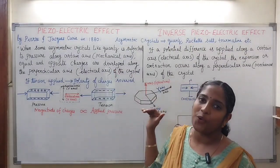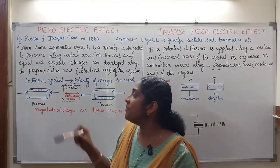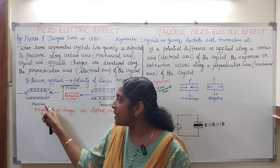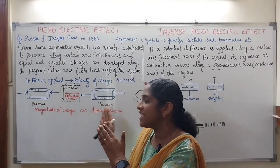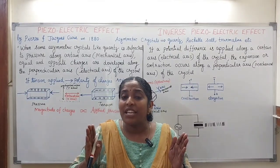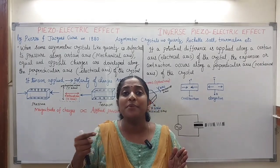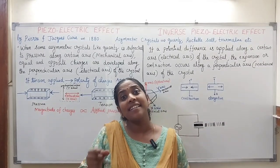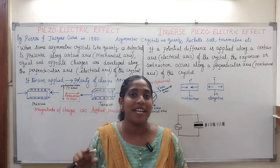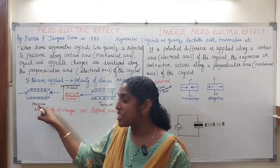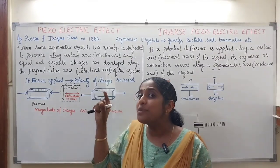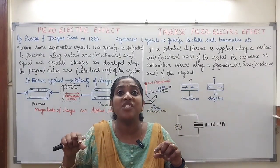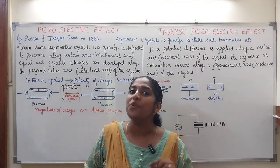It is very important that we apply the pressure along the mechanical axis, that is the Y-axis. Then only we will get the charges along the electrical axis. When we apply pressure along the mechanical axis, the length of the crystal will change — pressure decreases the length, tension increases it. This deformation produces charges because in asymmetric crystals the atoms are not arranged symmetrically, but the positive and negative centers of charge coincide. When we apply pressure or tension, deformation causes these centers to separate, and this separation of charges produces a potential difference.